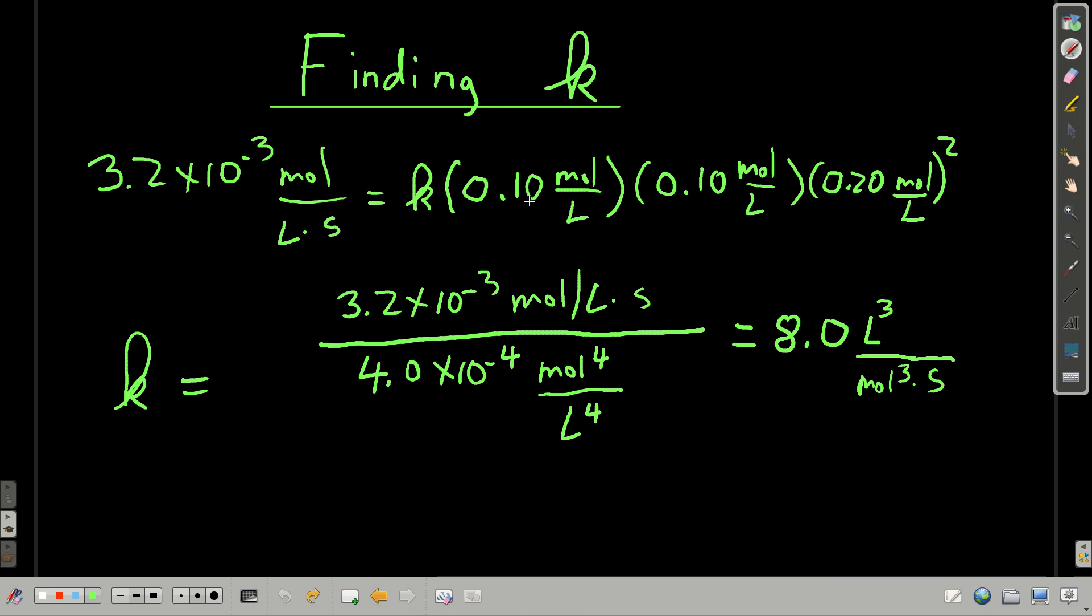And plug is equal to k, concentration of bromate to the first, bromide to the first, hydrogen ion to the second. If I multiply this out and solve for k. So I'm dividing both sides by everything in here. All of this goes down here. Multiply it out. Notice the units. Moles times moles times moles squared is moles to the fourth. Liters times liters times liters squared is liters to the fourth. Dividing out, we get, ends up, this is equal to 8.0, and the units here, check it out, make sure you get the same thing as liters cubed per moles cubed seconds. That's k. That's the rate constant.